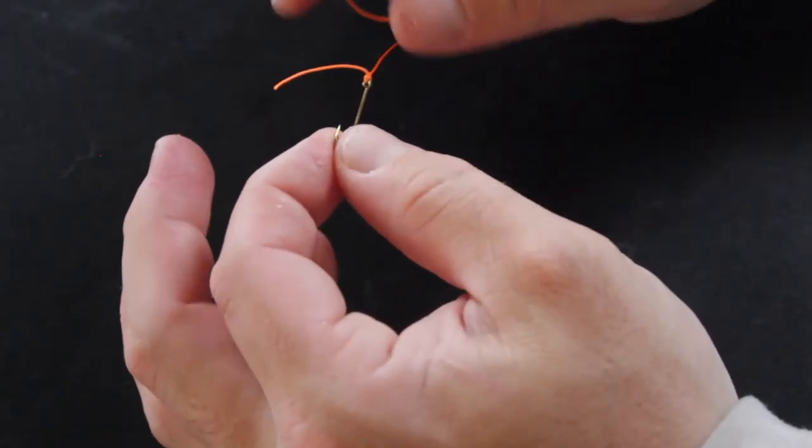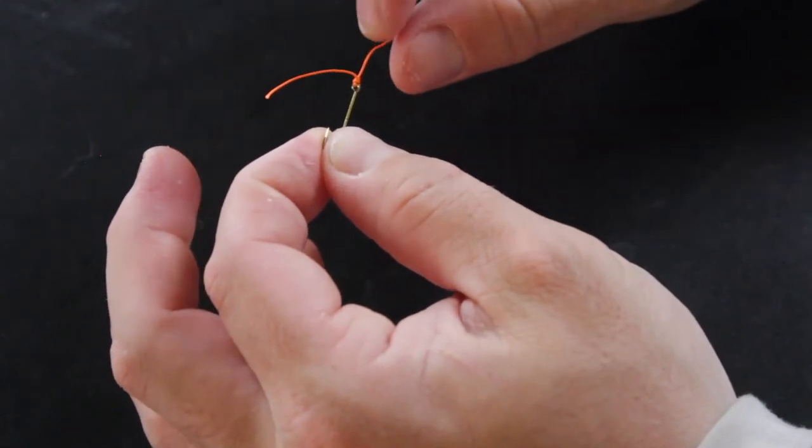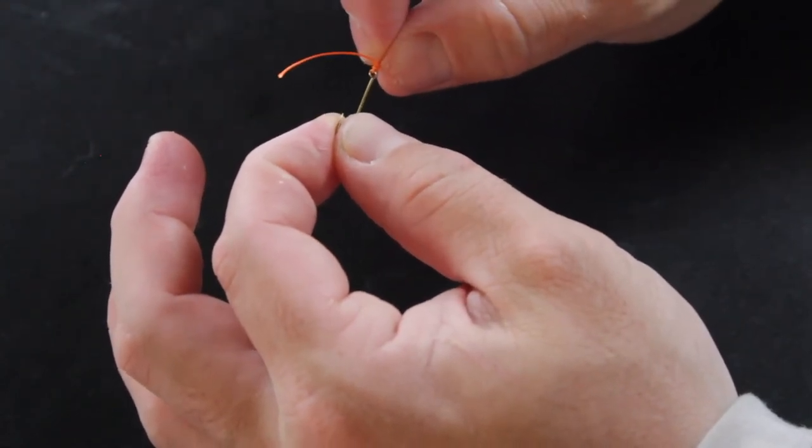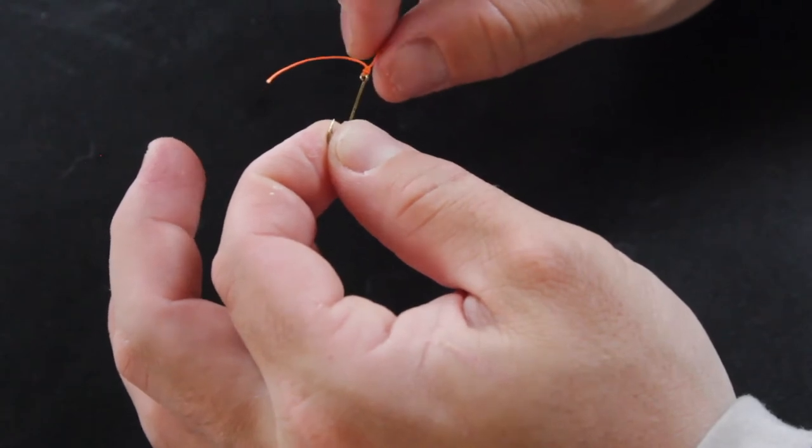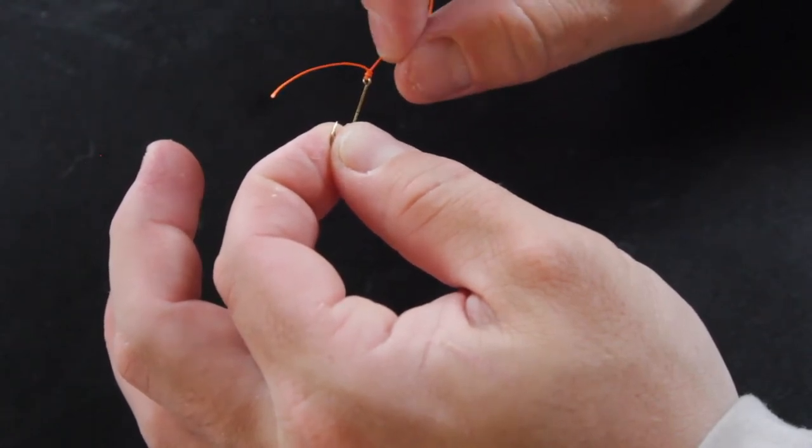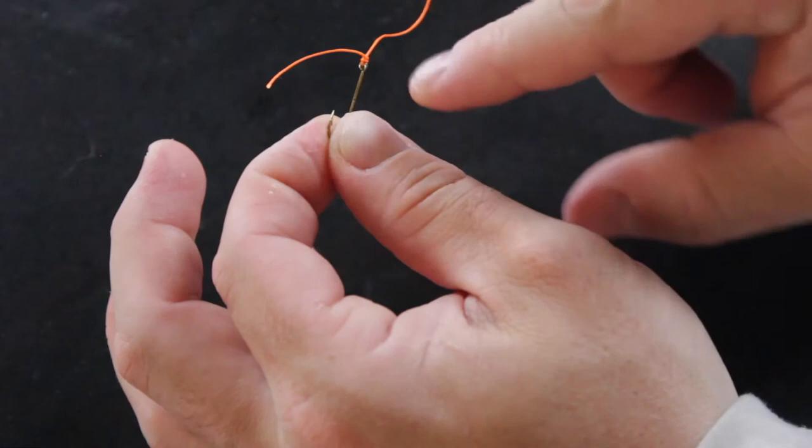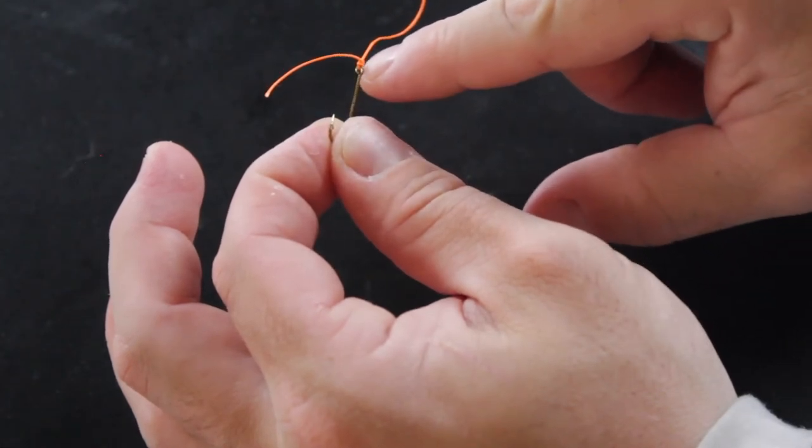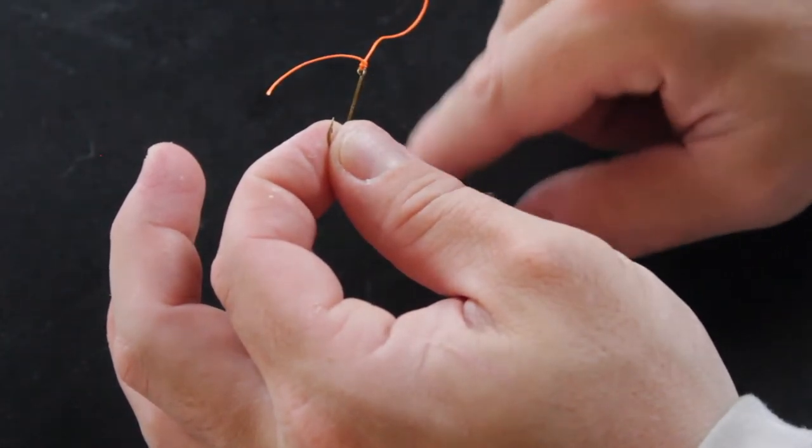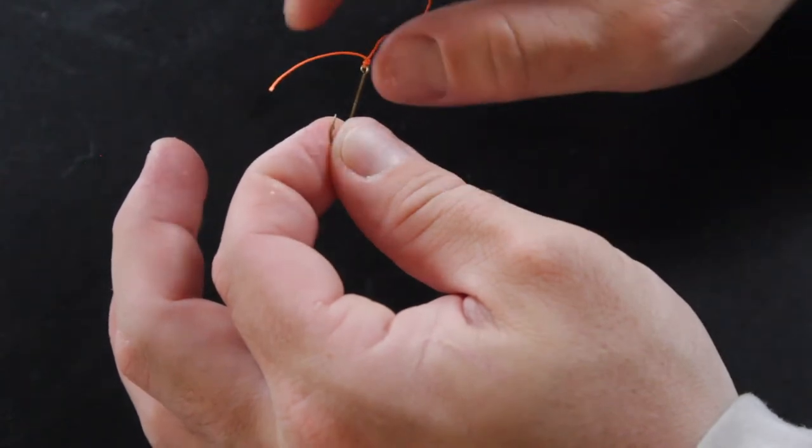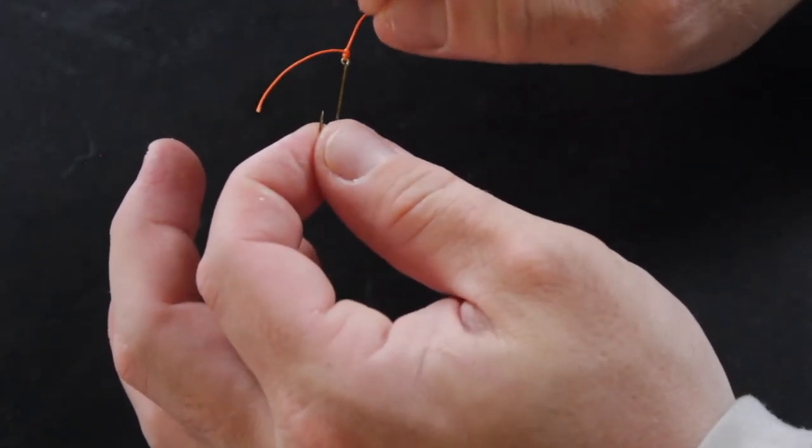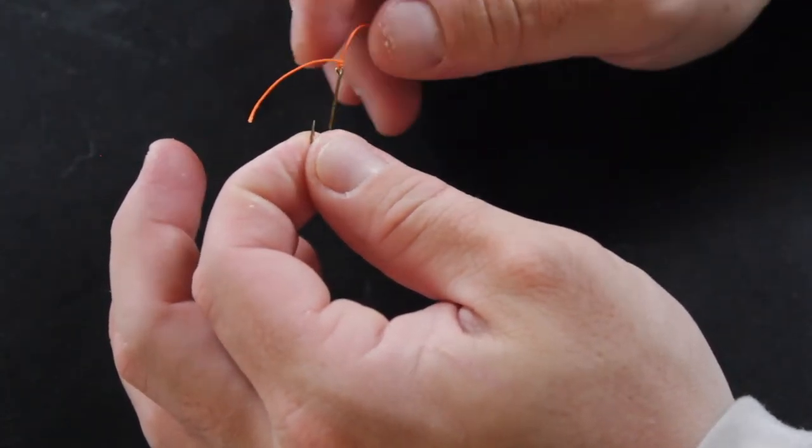Sorry. The improved clinch does have a larger knot diameter. So with smaller nymphs and smaller dry flies, this knot is definitely a little bit bigger. So when you're talking about 6x on a small chironomid, I would stick with a regular clinch.